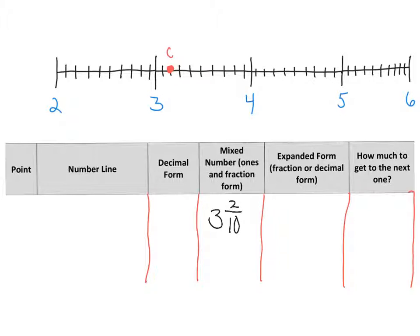Now we're used to seeing that because we did our fraction unit. Let's take that and put it into decimal form. How many ones do we have? We have three ones, and at our decimal point, after that decimal point, we're going to place our fraction — two-tenths. Where would the two go? The two is in the tenths place. So three and two-tenths in decimal form is 3.2, and as a mixed number is three and two-tenths.